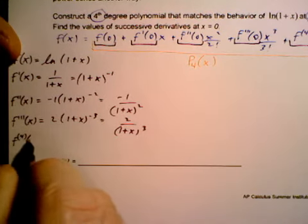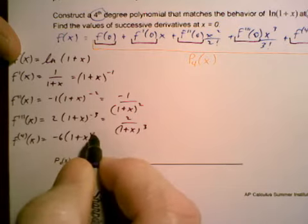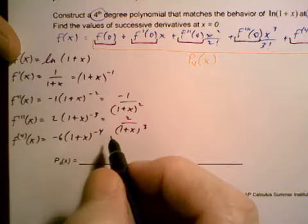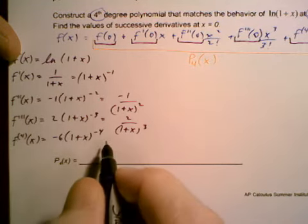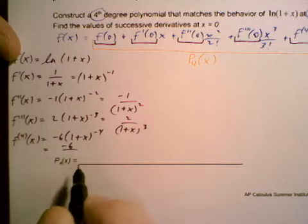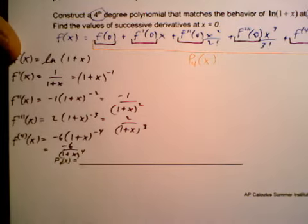And then finally, our fourth derivative at x is equal to negative 6 times 1 plus x to the negative 4. Multiply by the derivative of what's inside. Again, that's 1. So let's rewrite this right here. Negative 6 over 1 plus x to the fourth power. I'm going to leave some room right there on that line for the polynomial.